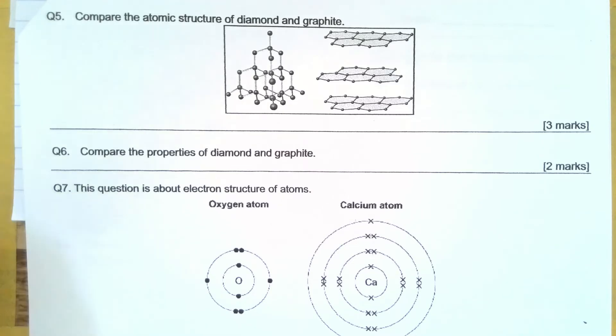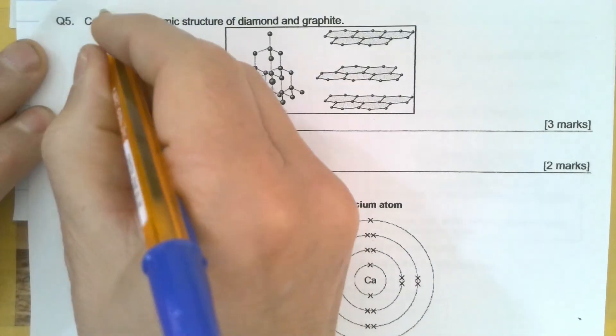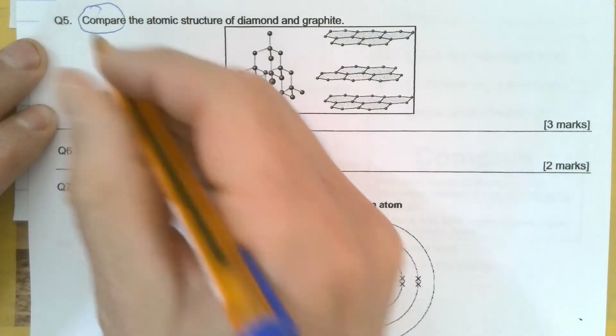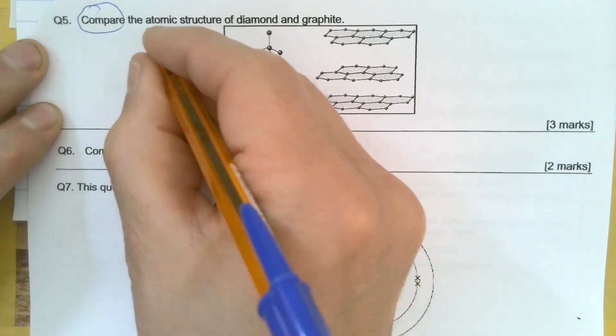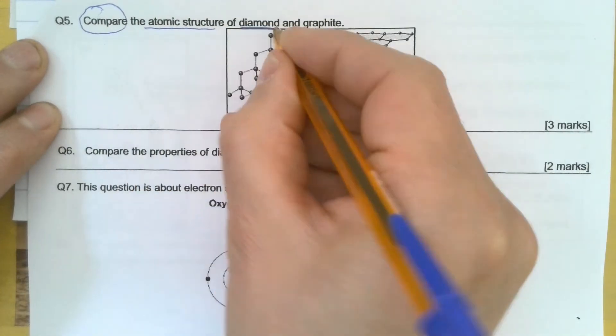We're looking at question 5. It's a compare question, so remember our CUB strategy: circle, underline, bullet. Compare the atomic structure of diamond and graphite.